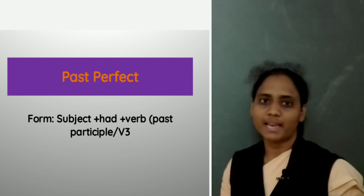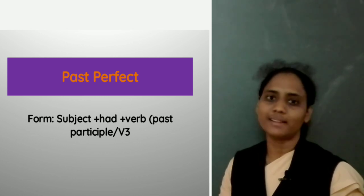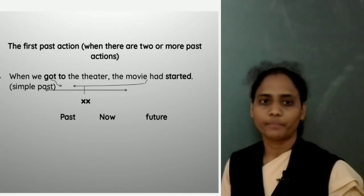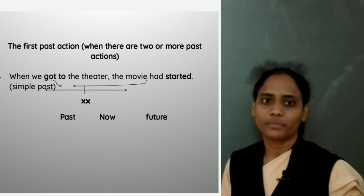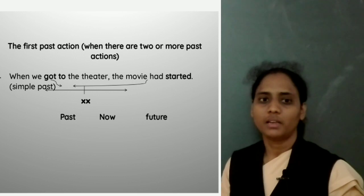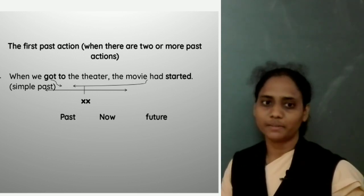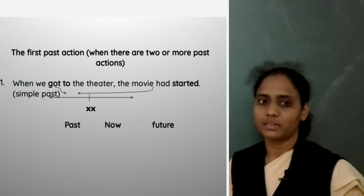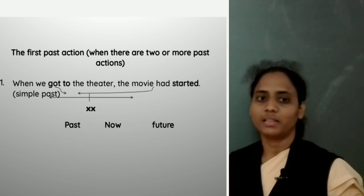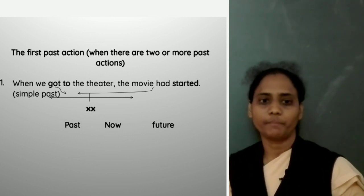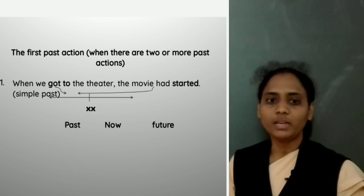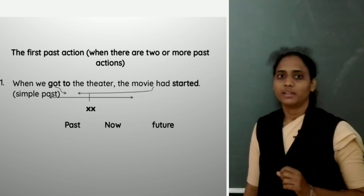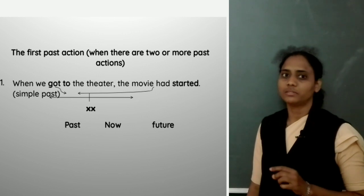Let's now move on to the past perfect tense. Before we talk about this tense, let us look at this past simple sentence: When we got to the theatre, the movie started. There are two past actions here — 'got to the theatre', which means we arrived there, and 'movie started'. You can see in the timeline that we got to the theatre first and then right after that, the movie started playing.